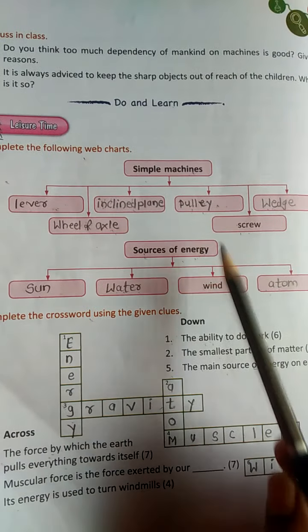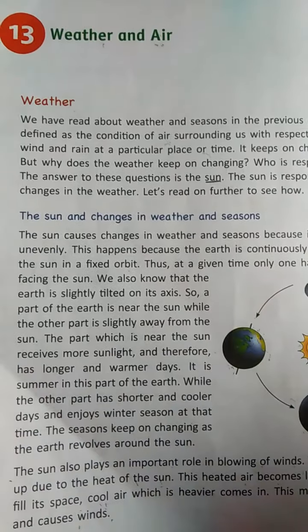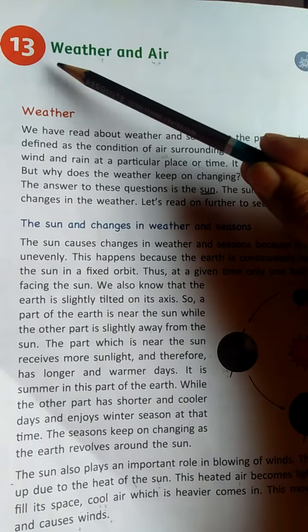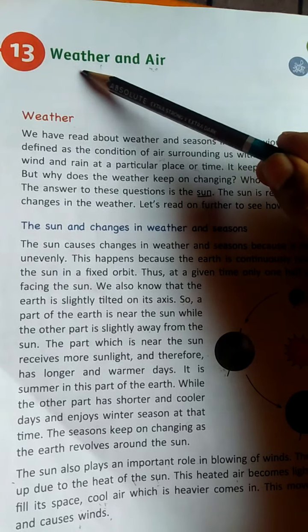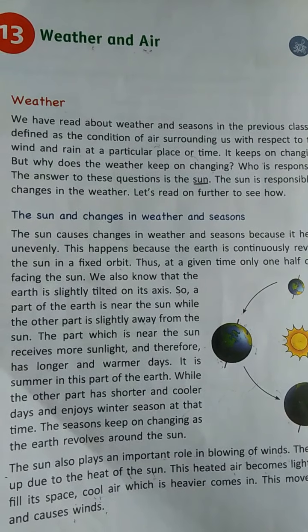You have to revise these two wave charts again. Then the last lesson is lesson number 13 — Weather and Air. In this chapter we learn about weather and air. Air is in our atmosphere; air is around us, but we cannot see it — we can only feel it.